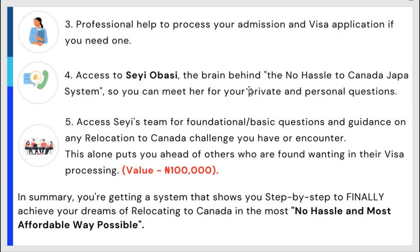Number four: you get access to Chi Obasi, the brain behind the No Hassle Canada Japa System program, so you can meet her for private and personal questions. You get her WhatsApp number, email, and phone number so you can communicate the way you want. Number five: you get access to Chi's team for foundational and basic questions and guidance on any relocation challenge you encounter — they will help solve whatever challenge comes your way.